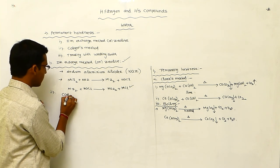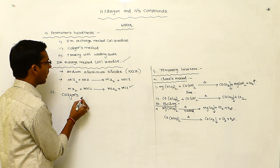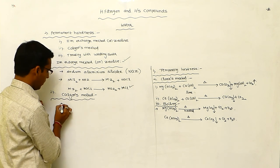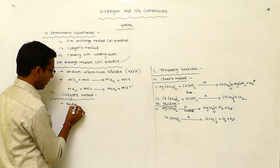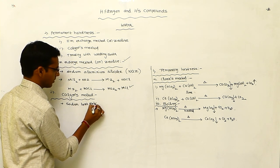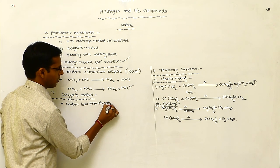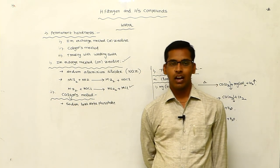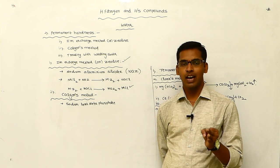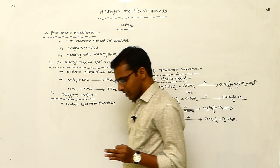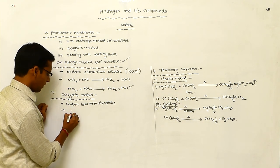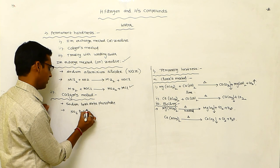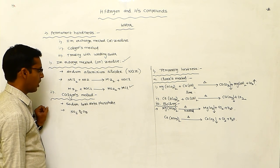The second method is the Calgon method. Sodium hexametaphosphate is called Calgon. Calgon means sodium hexametaphosphate, and its chemical formula is Na₆P₆O₁₈.